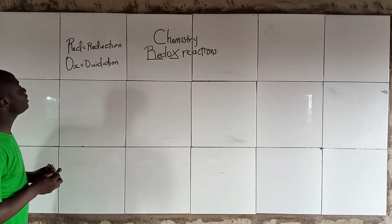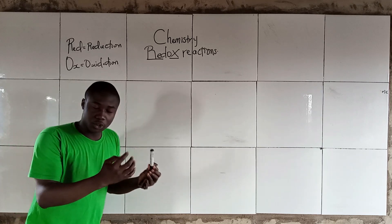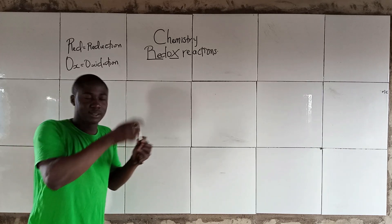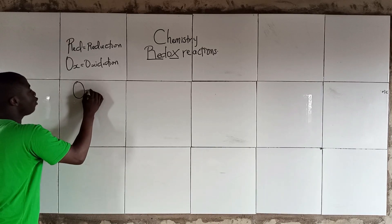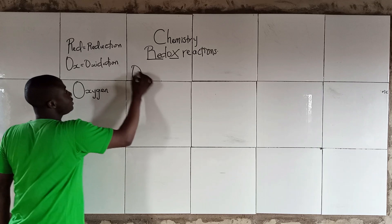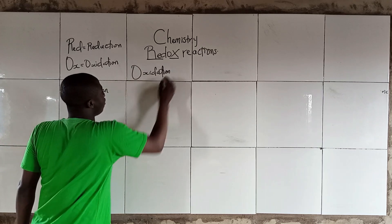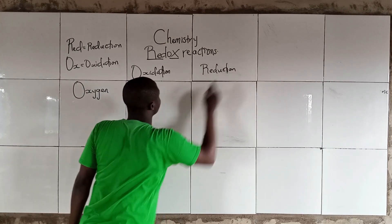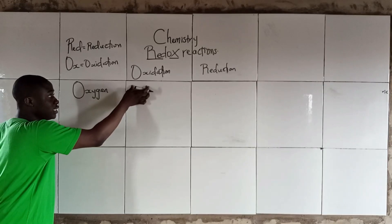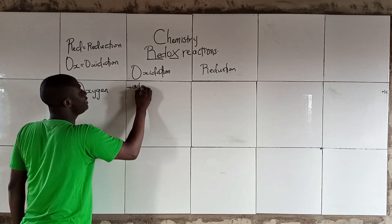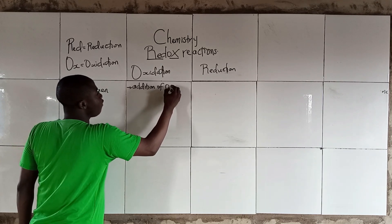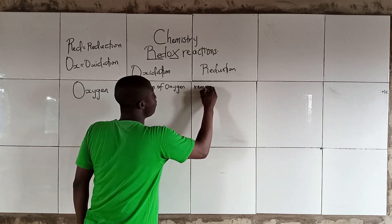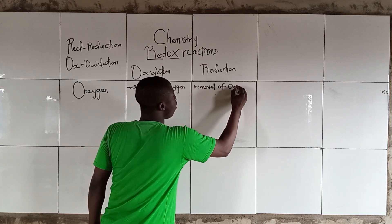Now, with these two terms — reduction and oxidation — I shall be explaining their meanings based on some terms. Based on oxygen, what is oxidation? It simply means addition of oxygen. And based on oxygen, what is reduction? It simply means removal of oxygen.